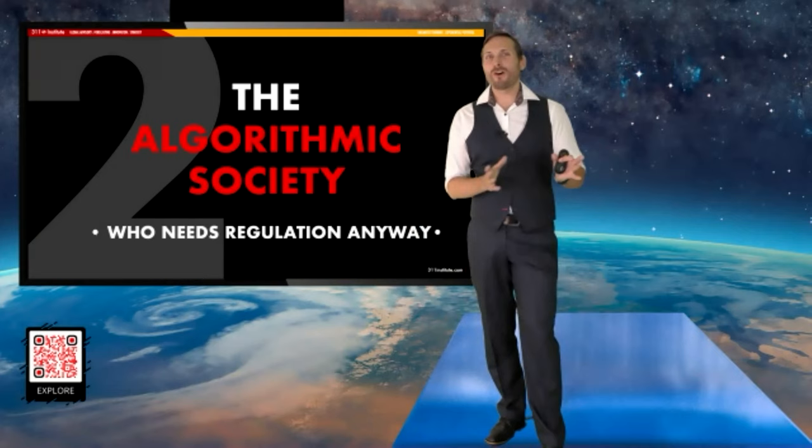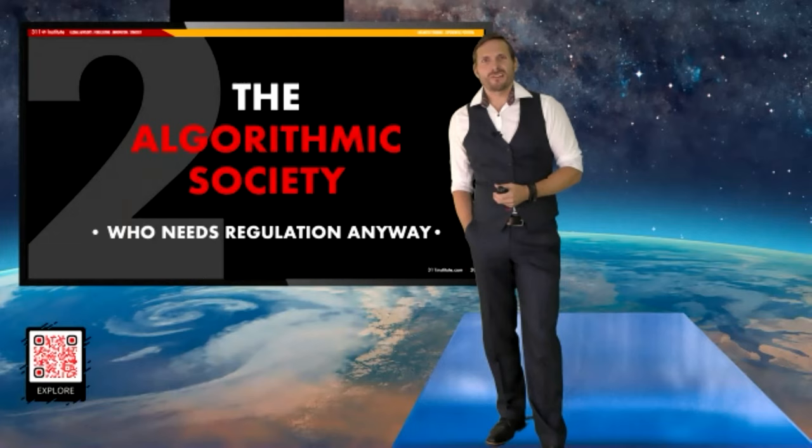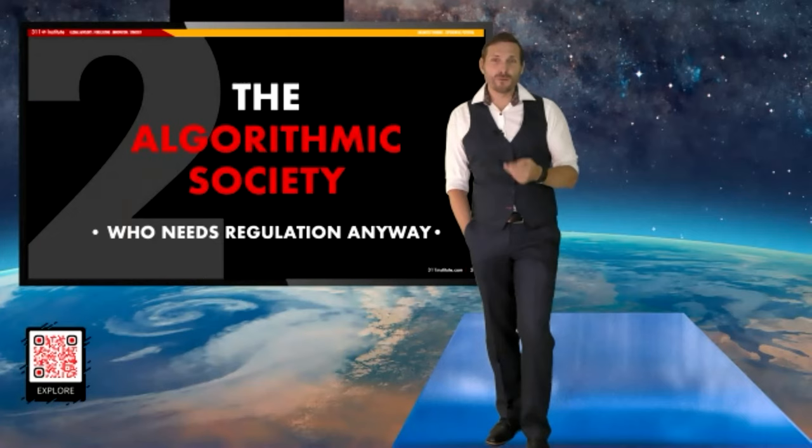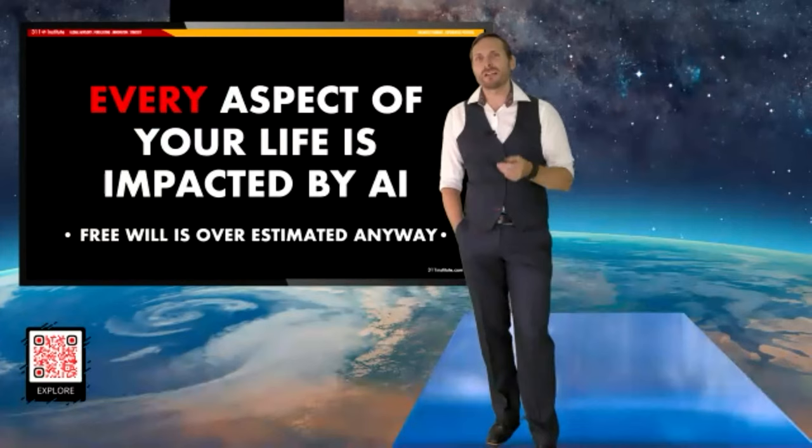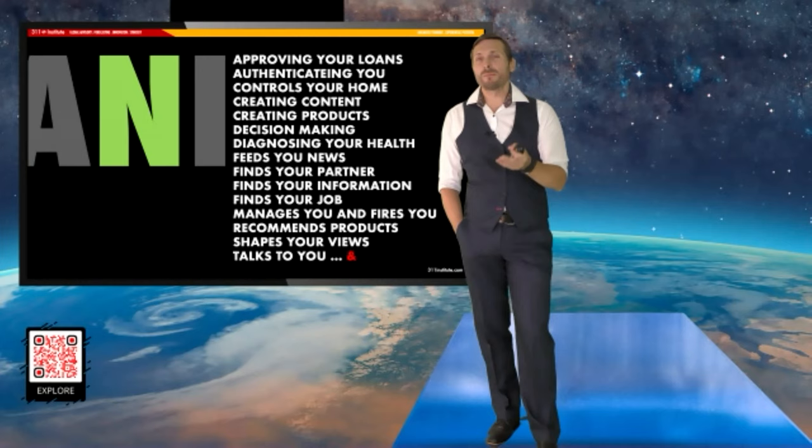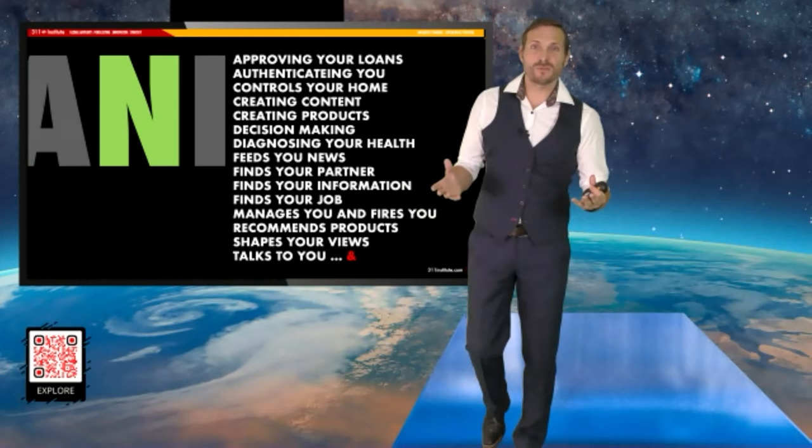Now, we also are on the cusp of handing over our own free will to AIs. We already live in what I call the algorithmic society. Consider this. Does artificial intelligence influence your life today? The answer is actually yes, and it influences it more than you might think. Every aspect of your life today, in some way, is influenced by AI. Your loans and your mortgages typically get approved by a machine learning algorithm. You are authenticated by an AI using two-factor authentication, biometrics, behavioral authentications as well.